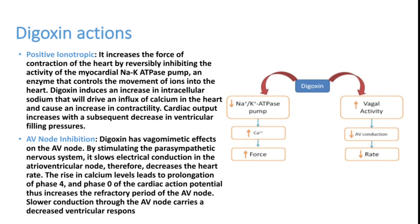We are now using digoxin mainly in atrial fibrillation with cardiac failure so it can control heart rate and increase pumping. The second action is AV node inhibition — a vagomimetic effect on the AV node by stimulating the parasympathetic nervous system. This slows electrical conduction in the AV node and decreases heart rate, which is why it is used in atrial fibrillation with fast ventricular rate.